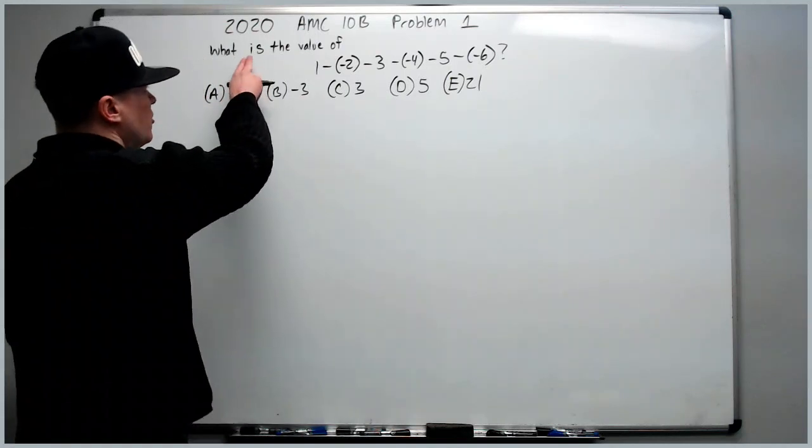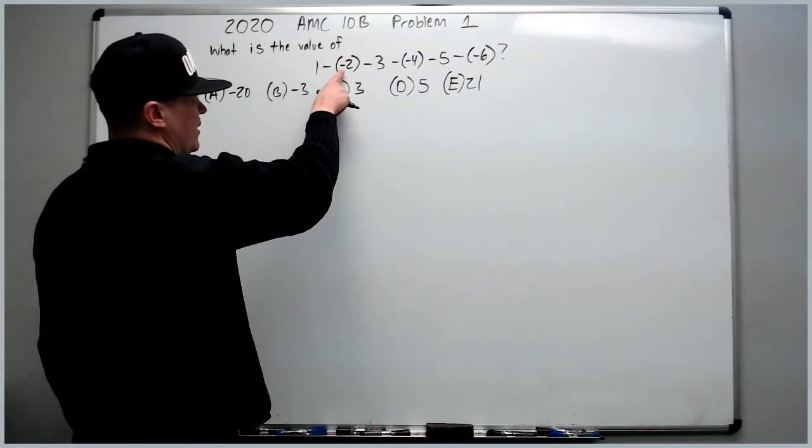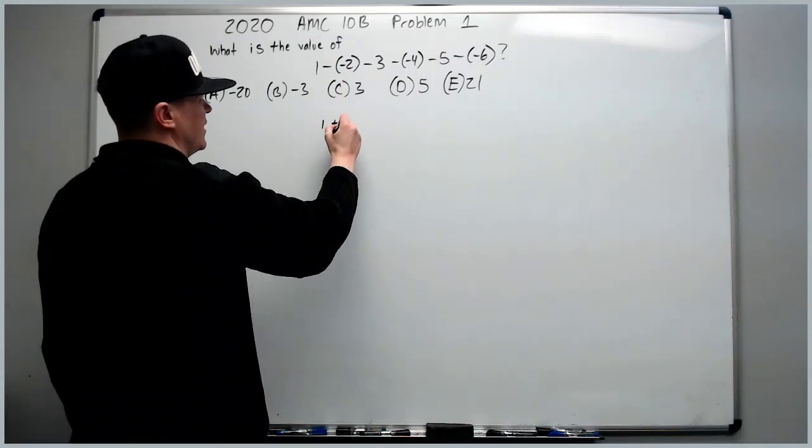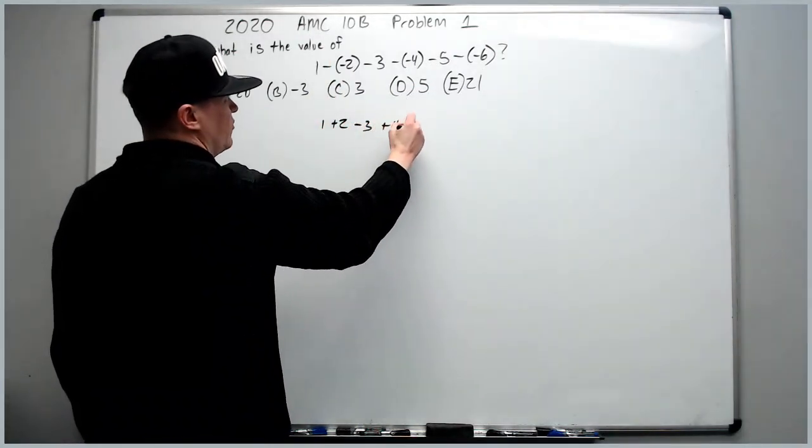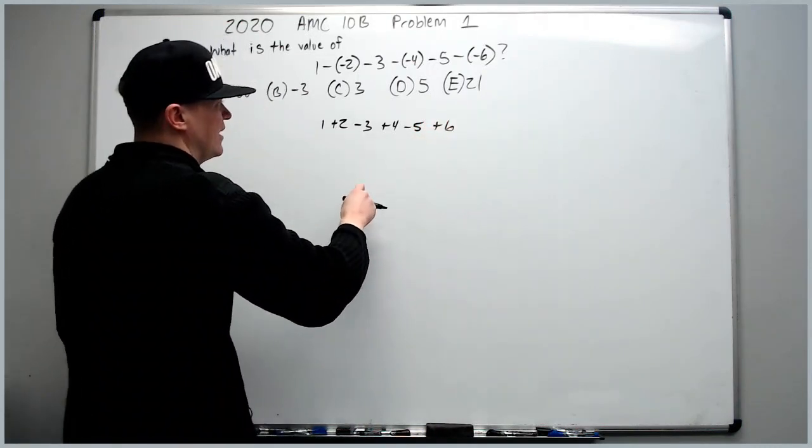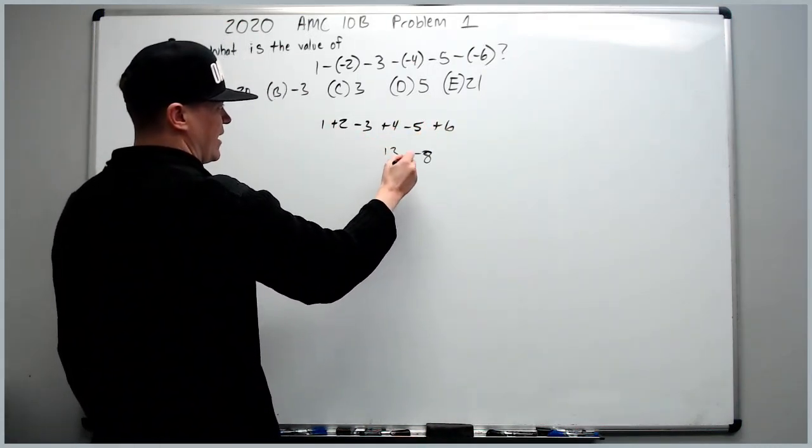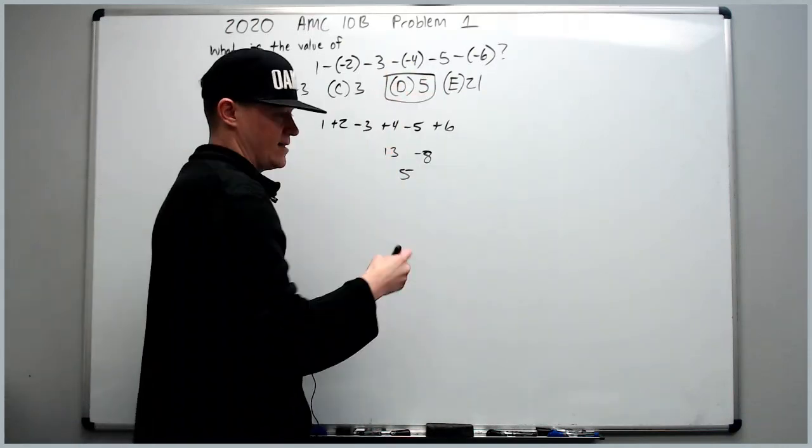Okay, what is the value of 1 minus negative 2? This is just start calculating. 1 plus 2 minus 3 plus 4 minus 5 plus 6. Take your two negatives, make it 8. 10 and 13 minus 8 is 5. Answer choice D.